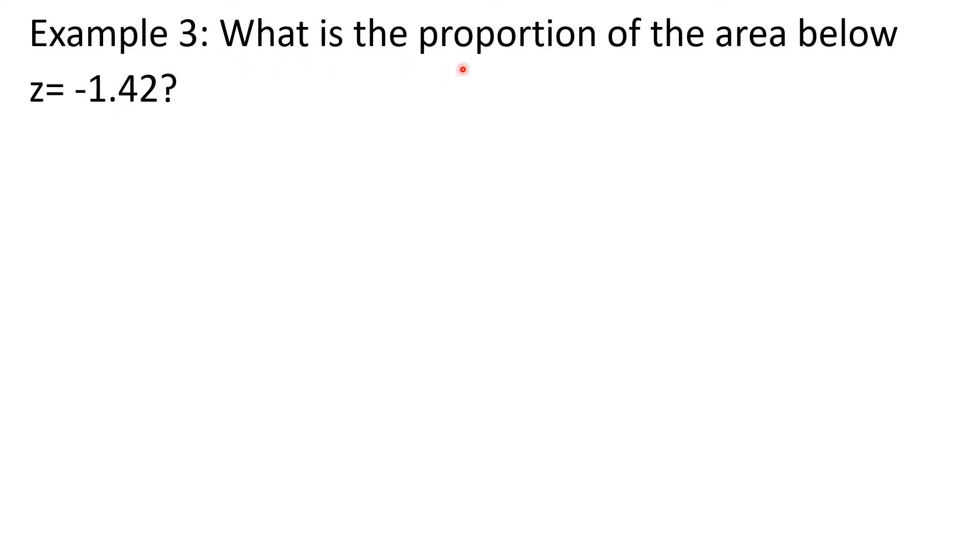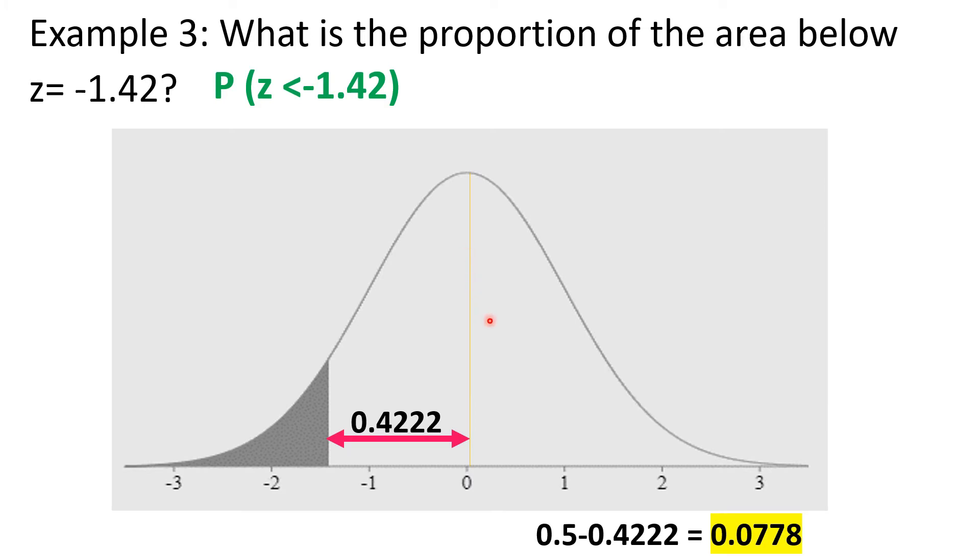Example 3. What is the proportion of the area below z is equal to negative 1.42? In notation, that is P or probability that z is less than negative 1.42. From the previous lesson, we've known that the area less than negative 1.42 or below negative 1.42 is 0.0778. We will not explain this anymore because we have tackled this and we've detailed the explanation in the previous lesson. Since the area under the normal curve is also the same as the proportion or the probability, then the answer to this example or the value of this notation is also 0.0778.